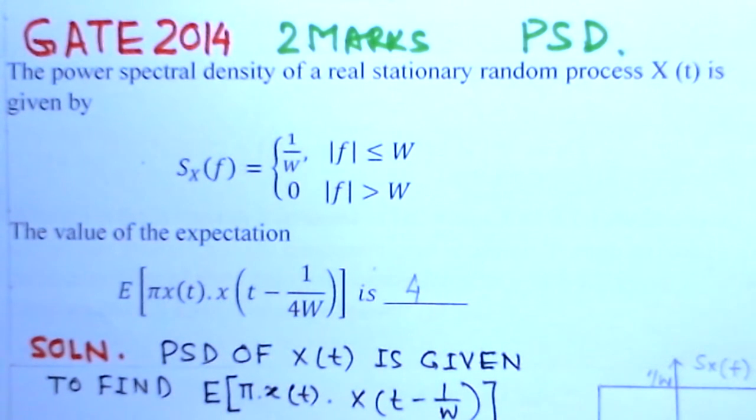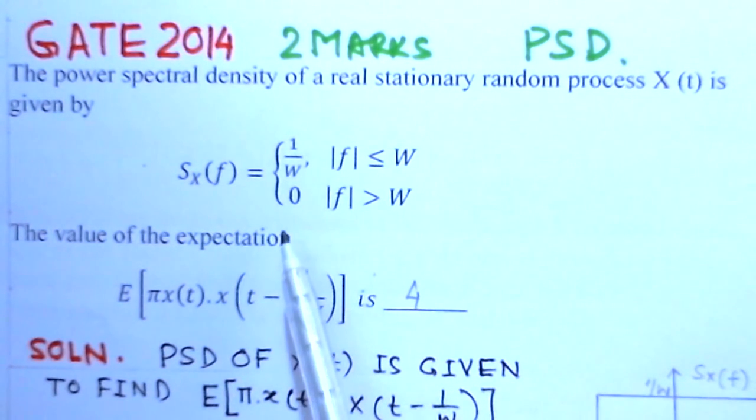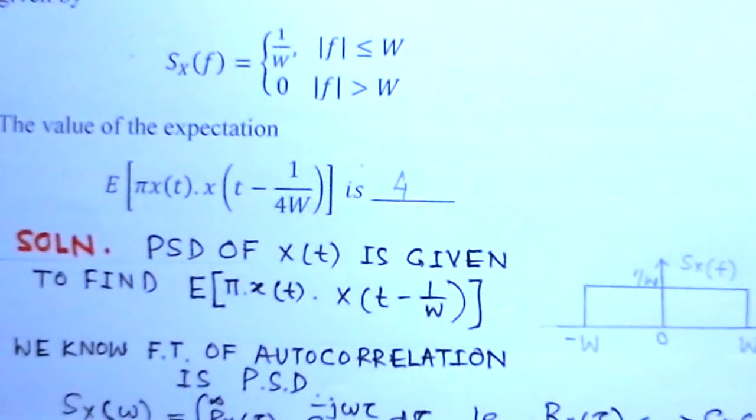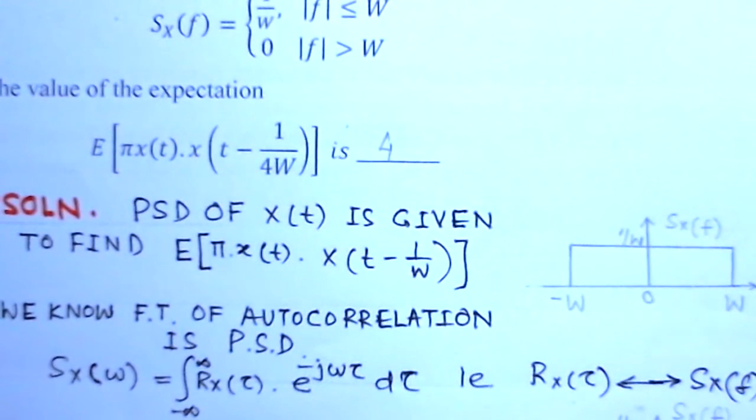The solution to this problem: here the PSD is given and from PSD we have to find out the expected value. So we start with the PSD which is given, the power spectral density of X(t), and we have to find the expected value.